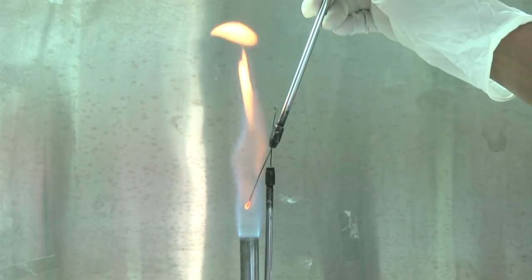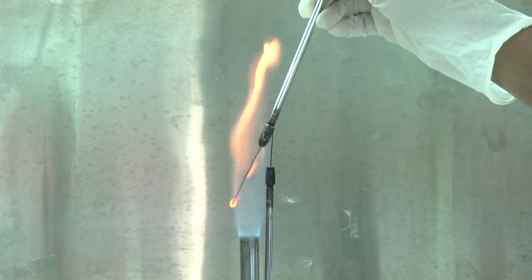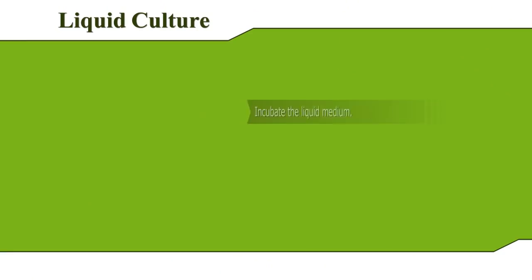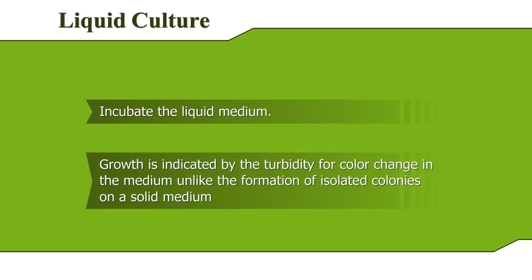Sterilize the wire loop before keeping it down. Incubate the liquid medium. Growth is indicated by the turbidity of the medium, unlike the formation of isolated colonies on a solid medium.